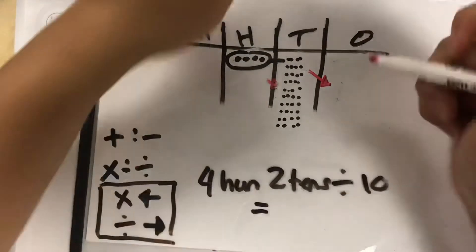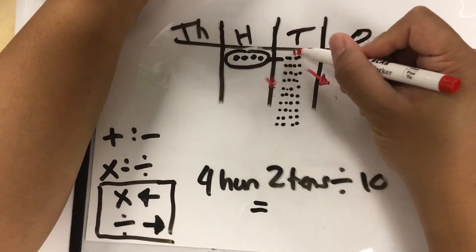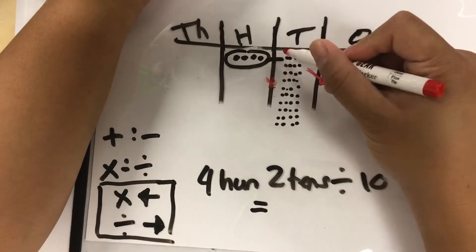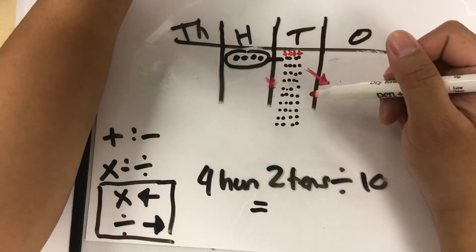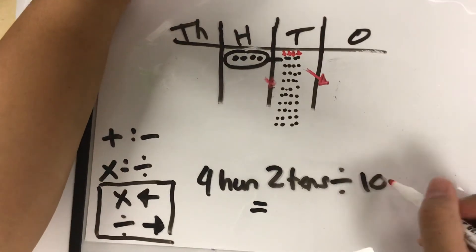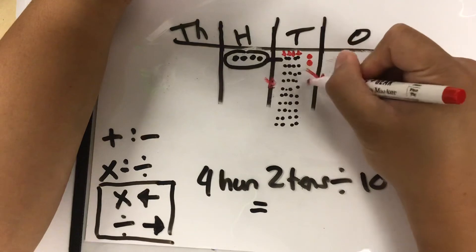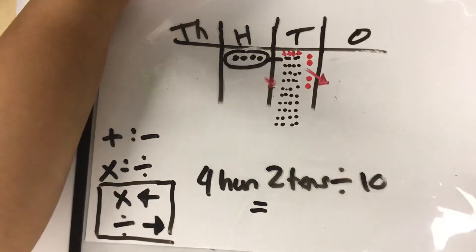And if we group them up, let me use the red. If we group them up, this row of 10—there's one row of 10, two rows of 10, three rows of 10, and four rows of 10. We just divided our 40 tens by 10, and that ends up with four whole columns of 10, which means we have four tens.